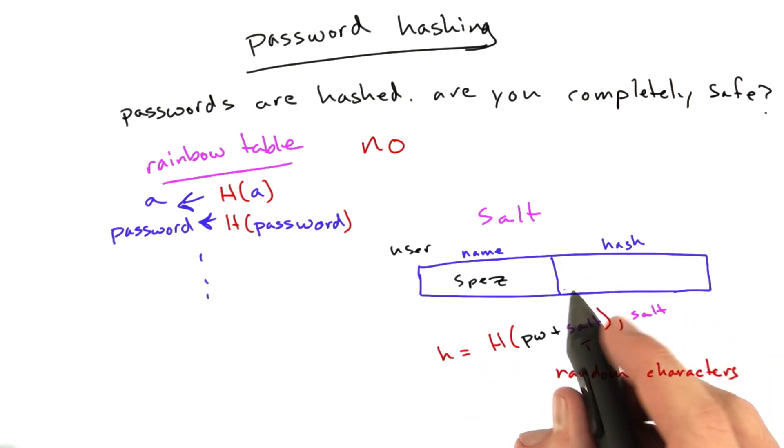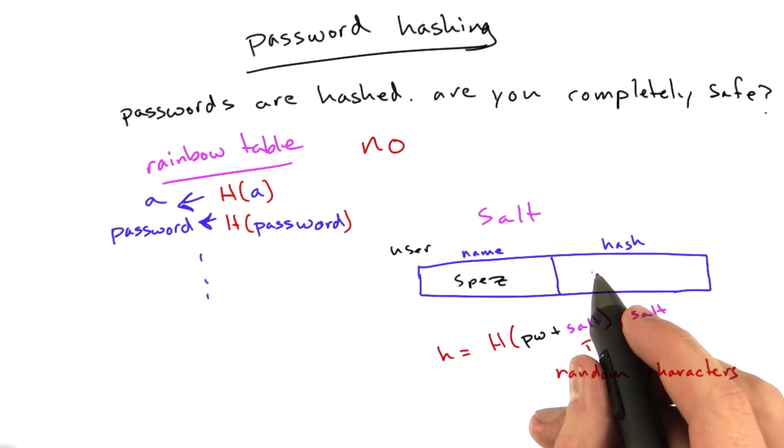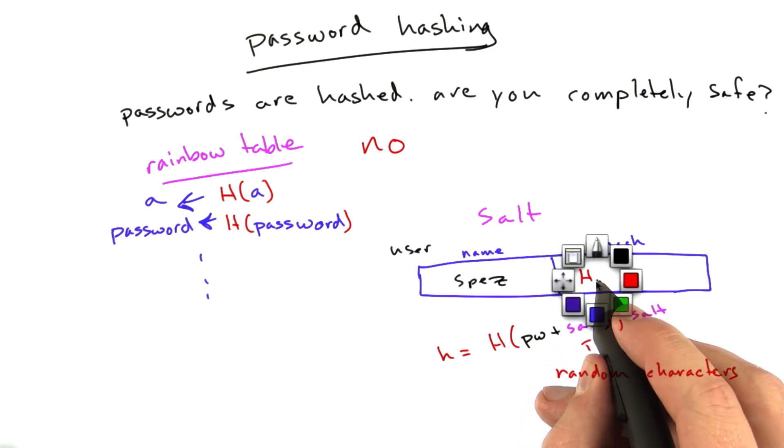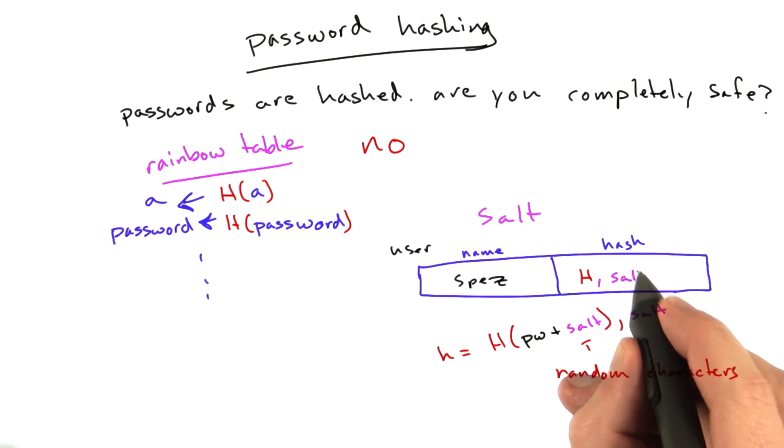So in this field, we'll actually have the hash. We'll just abbreviate that as H. And right along with it, we'll have the salt.